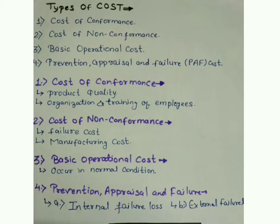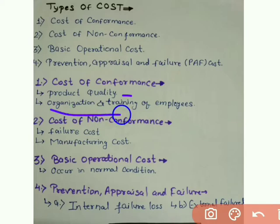Cost of conformance means: are the specifications that the company has given for a product being followed or not? Basically, it means preventing defects from going to the customer — whatever can go wrong is prevented before the product reaches the customer. You can check product quality, do outgoing checks, and conduct training of employees so that what you manufacture already has very good quality with minimal chances of defects.